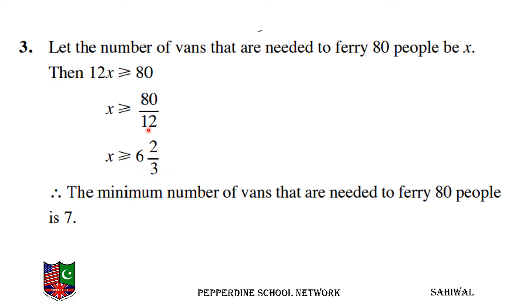Since x is greater than or equal to 6 and 2 over 3, and the number of vans must be a whole number, we round up. Therefore, the minimum number of vans needed to ferry 80 people is 7.